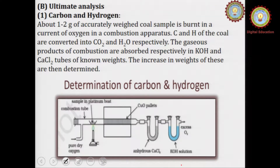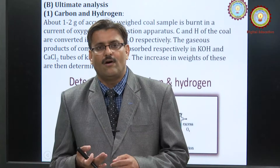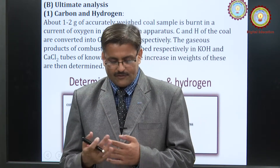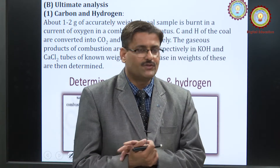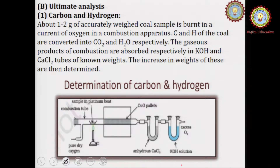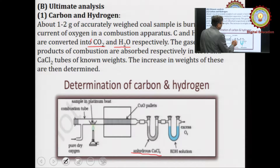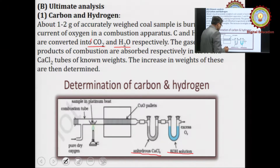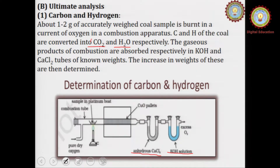In ultimate analysis, the percentages of carbon, hydrogen, nitrogen, oxygen, and sulfur are calculated. For carbon and hydrogen, the coal sample is burnt in an apparatus so that carbon dioxide and steam are produced. When carbon is burnt it changes to carbon dioxide, and when hydrogen is burnt it changes to water molecules. That mixture of carbon dioxide and water vapor is passed through a U-tube containing anhydrous calcium chloride, and in another chamber, a known amount of potassium hydroxide solution is taken.